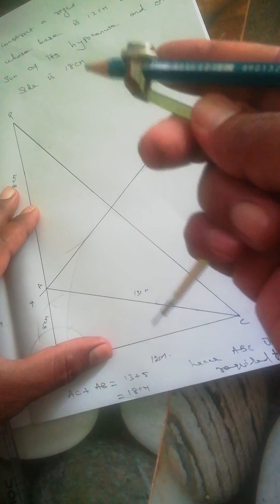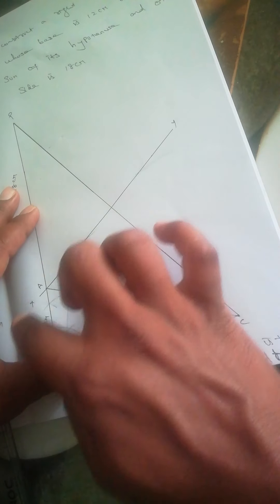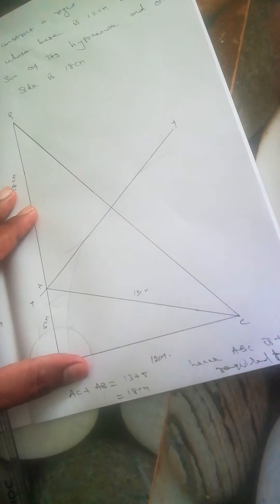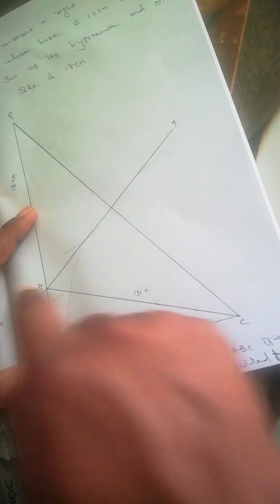You can take a little bit longer if needed. Join the intersection points to create line XY. Where this line meets the opposite side, mark point A.